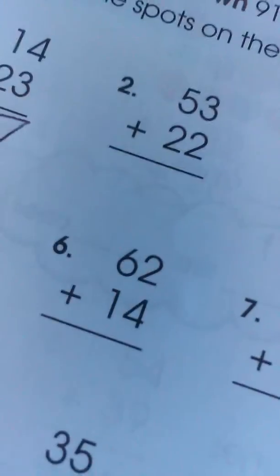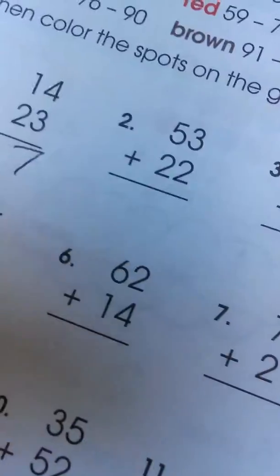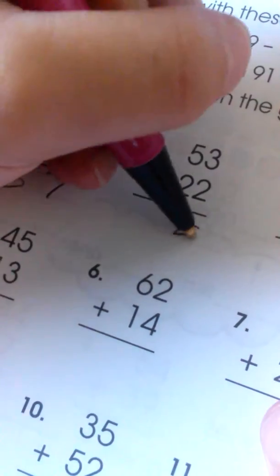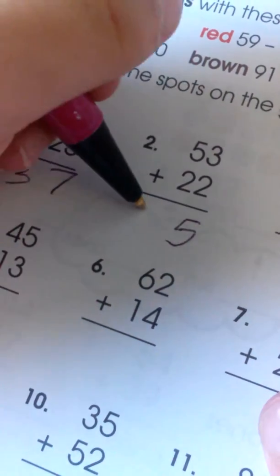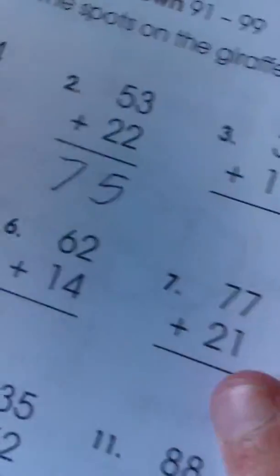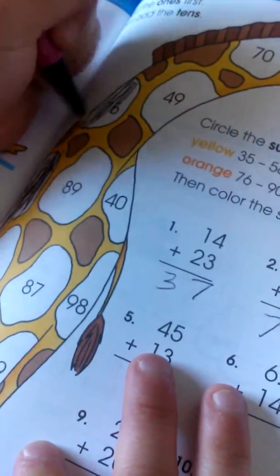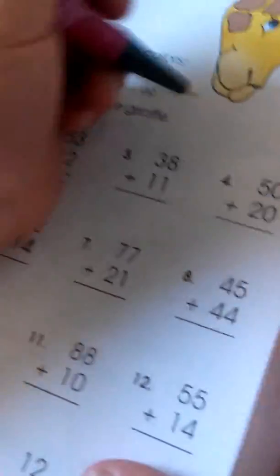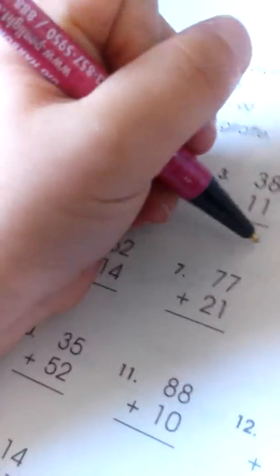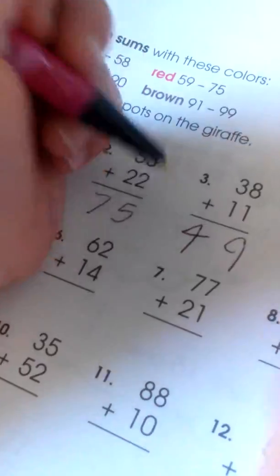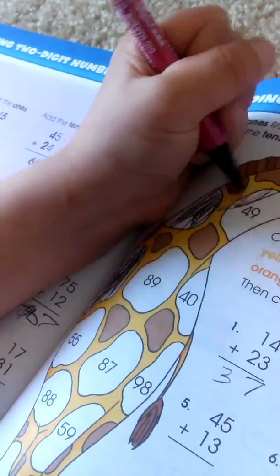Now 53 plus 22. 2 plus 3 is 5, 5 plus 2 is 7, so the answer is 75. Let's look for 75. I just found it. 38 plus 11. 1 plus 8 is 9, 3 plus 1 is 4 and that's the answer. Let's look for 49, it is over here.